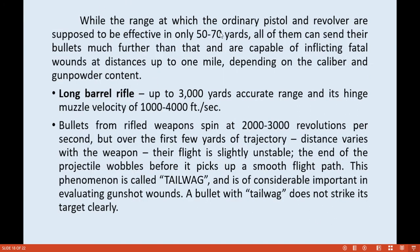While the range at which ordinary pistols and revolvers are supposed to be effective is only 50 to 70 yards, they can send their bullets much further and are capable of inflicting fatal wounds at distances up to 1 mile, depending on caliber and gunpowder content. A long barrel rifle has an accurate range of up to 3,000 yards and a muzzle velocity of 1,000 to 4,000 feet per second. Bullets from rifle weapons spin at 2,000 to 3,000 revolutions per second.